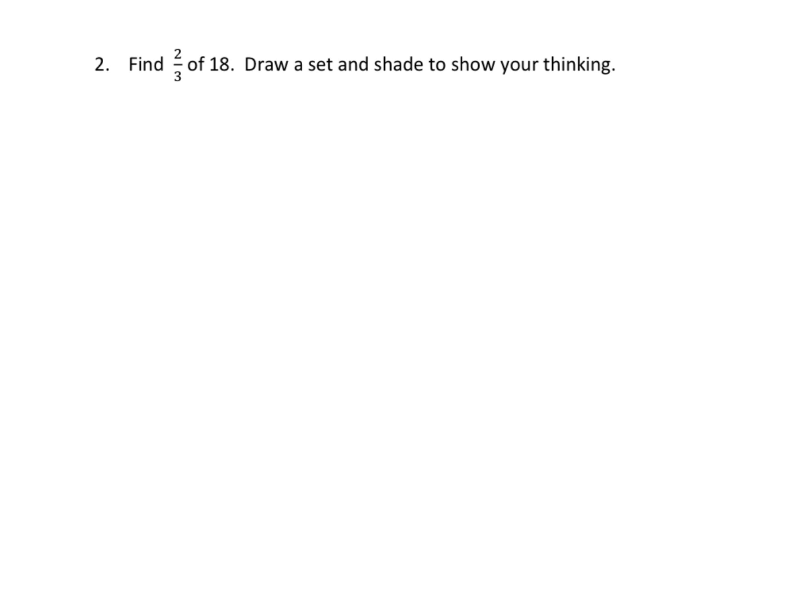So when we say find 2 thirds of 18, now they say draw a set in the directions, but I prefer to think of it as draw an array. So I want you to draw an array of 18 dots. Now why are we going to do 18 dots? Because it says so right here. Because the denominator is a 3, I'm going to make life a little bit easier and I'm going to do 3 in each row.